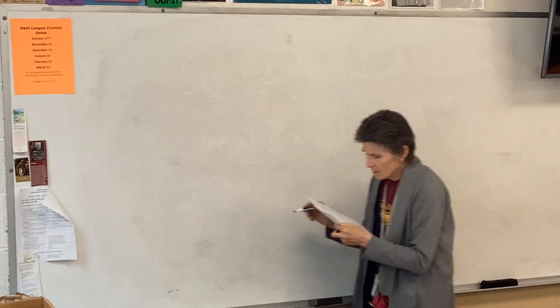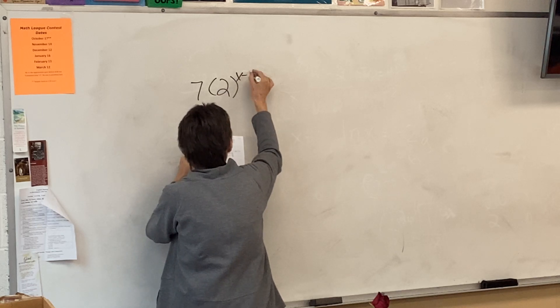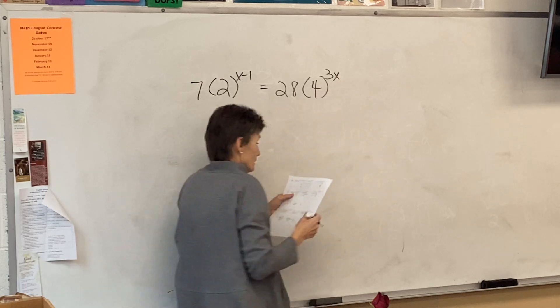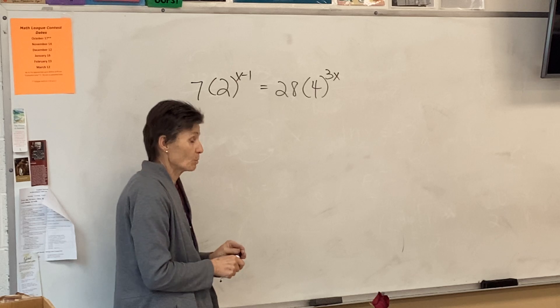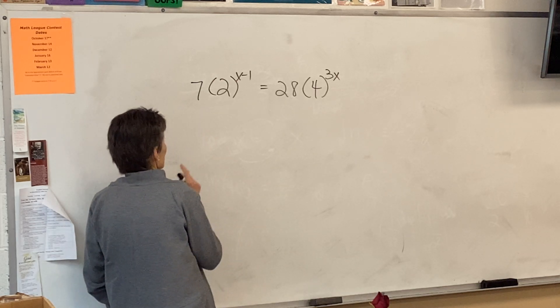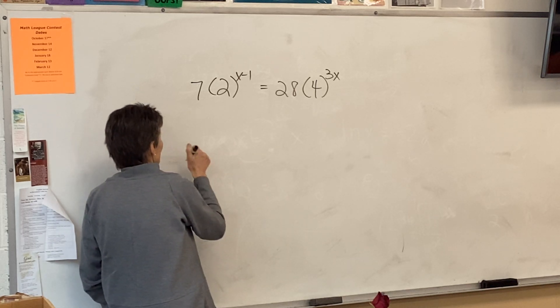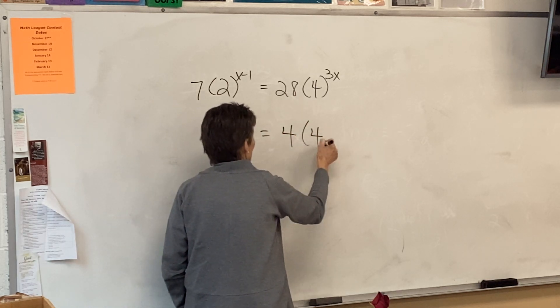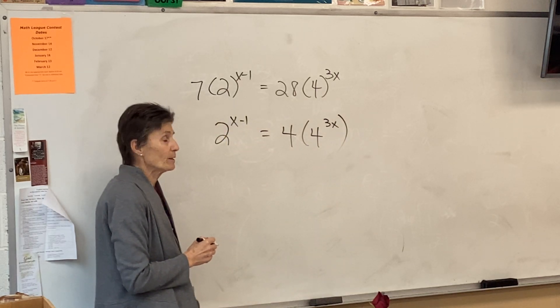Okay, so 22 says solve this equation. And this would be on the no calculator part of the test. We won't need a calculator for this one. If we're not going to use a calculator, then there must be a way to get a common base. So I think the first thing I'll do is divide out that 7. Does that make sense? Divide both sides by 7, get rid of that.